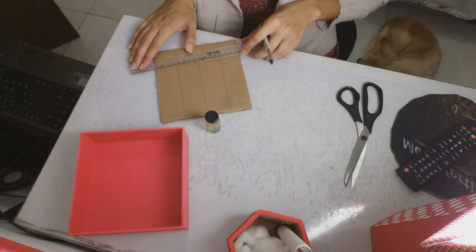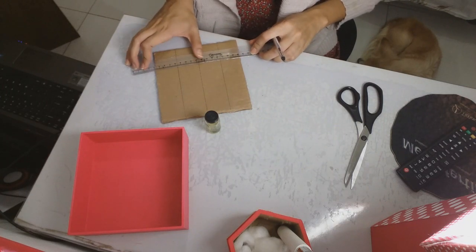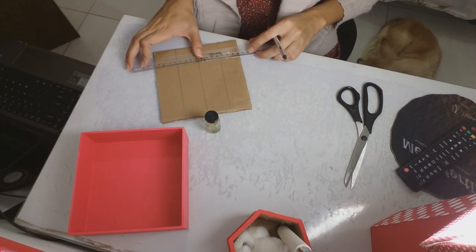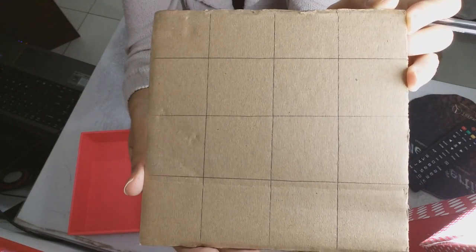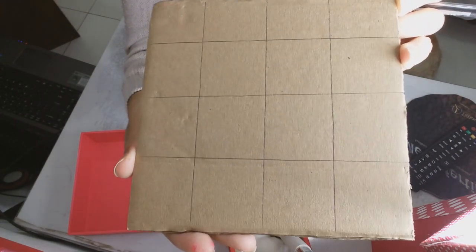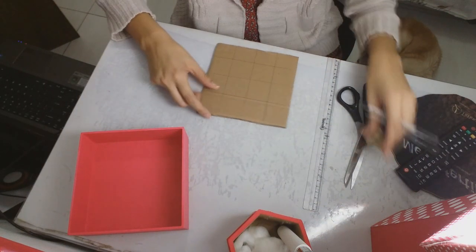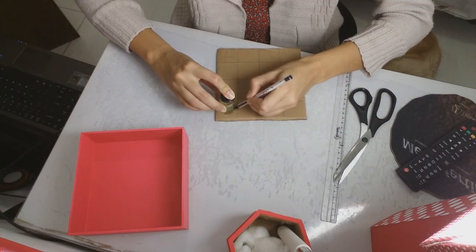Para os círculos ficarem na mesma direção, desenhe quadrados no papelão. Neste caso, 16 quadrados. E em cada quadrado, você vai desenhar um círculo. No meu caso, eu utilizei um vidrinho de reparador de cabelos para fazer esses círculos.